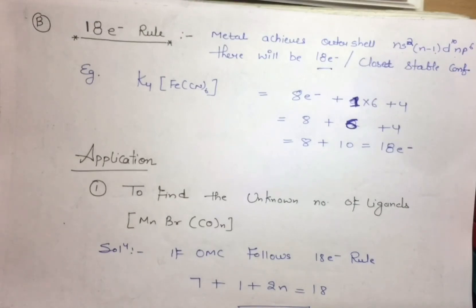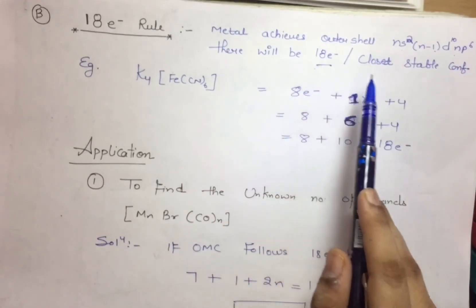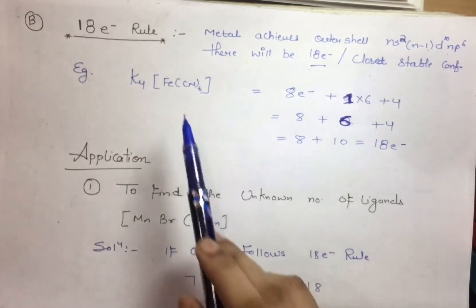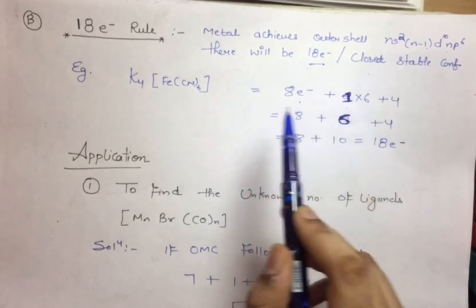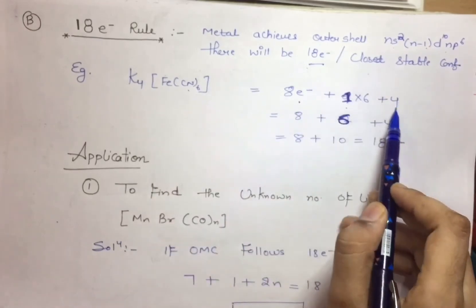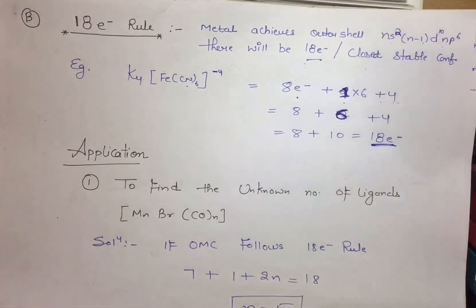The 18-electron rule applies when the metal achieves an outer shell configuration of ns², (n-1)d¹⁰, np⁶ — giving 18 electrons in the valence orbitals. For example, with iron: the atomic number of iron plus the electron count from cyanide (1 each), with 6 ligands and a charge of minus 4 on the sphere (so we add plus 4), the total equals 18 electrons. This compound therefore follows the 18-electron rule.